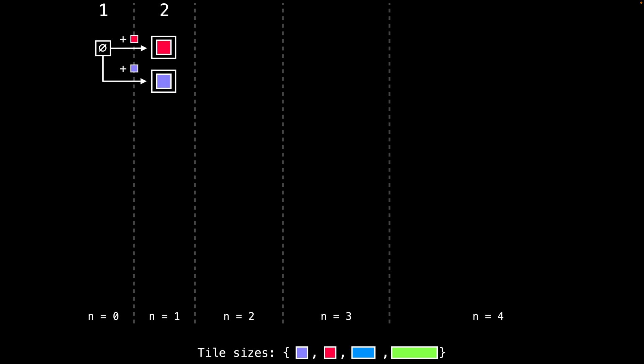From the empty state, there are exactly two ways to make a board of length one. We can either tile the board of length one using a red block or tile a board of length one using a purple block. There are no other ways to make a board of length one, because our other tiles, the blue and green tiles are too large to even fit on the board at the moment.